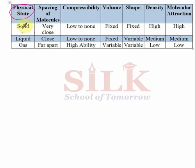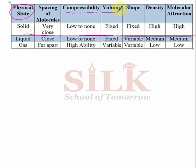If you look at this chart, this shows the physical states. All solid qualities are mentioned here — the spacing of molecules, inter-molecular spaces, compressibility, volume, shape, density, and inter-molecular forces. Now the three states are solid, liquid, and gas.